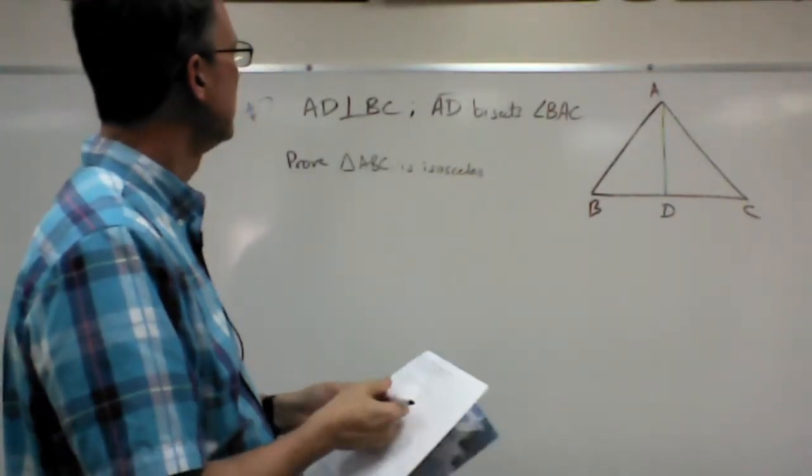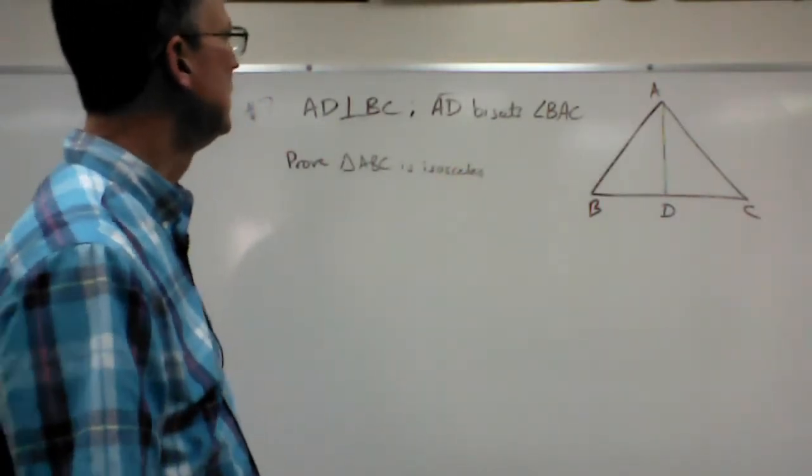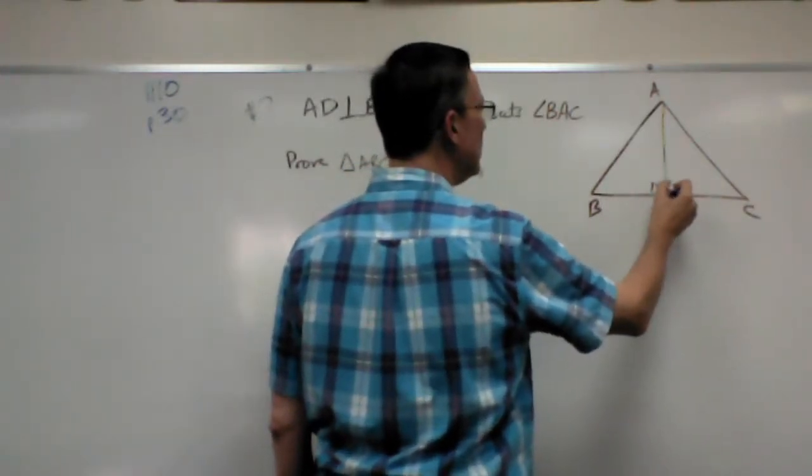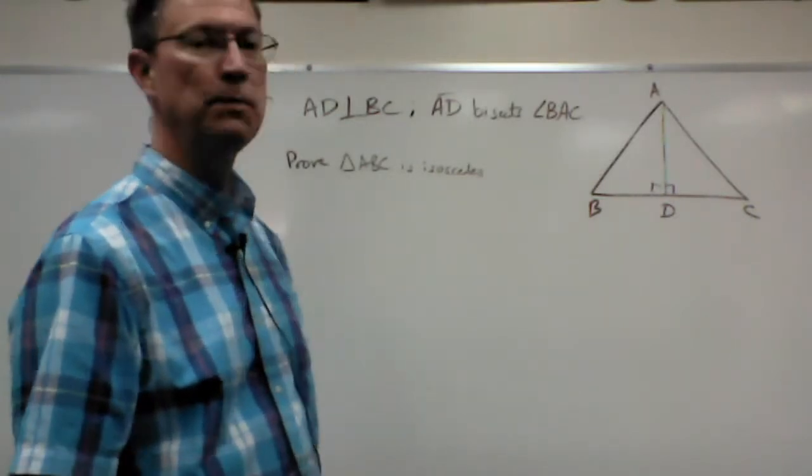So the first thing is obviously given. Let's label what they tell us. AD is perpendicular to BC. So we know these are right angles. AD bisects angle BAC.